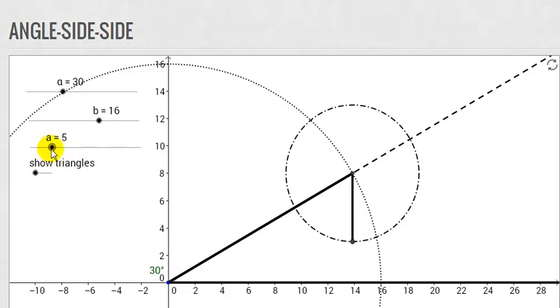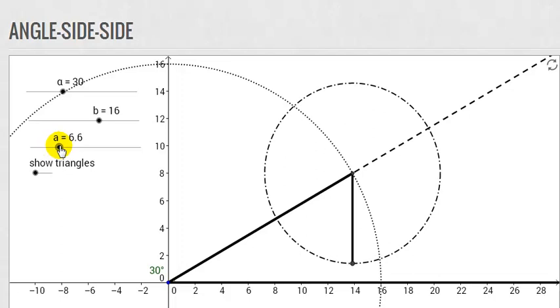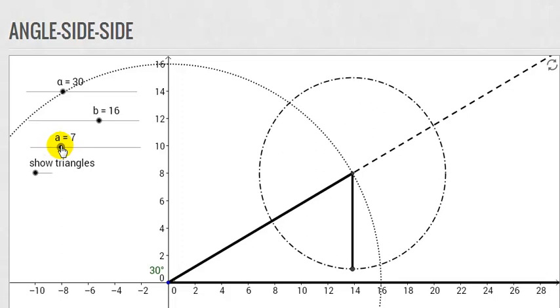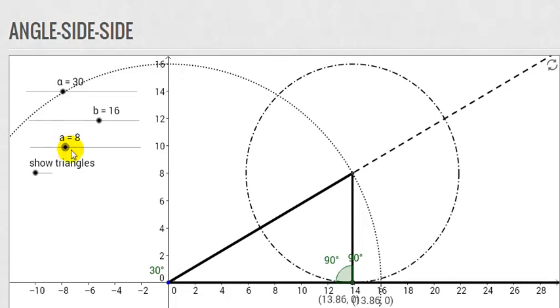So now let's make a larger. And as you can see, as a gets larger, it's going to get closer and closer to the other side. And eventually when a equals 8, it just touches the other side and I get a 90 degree angle.